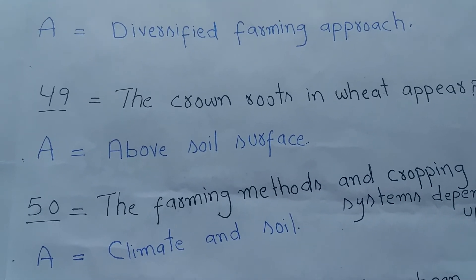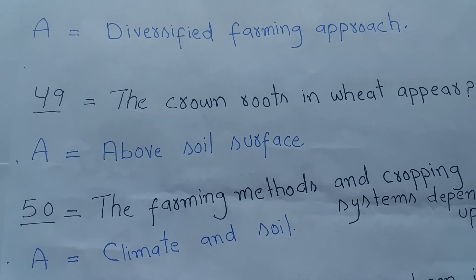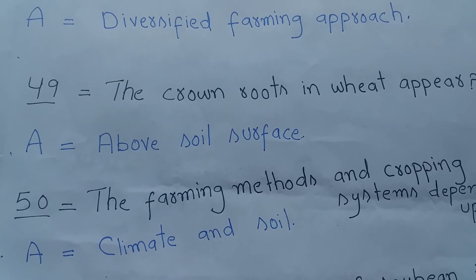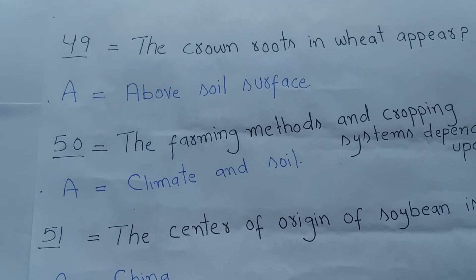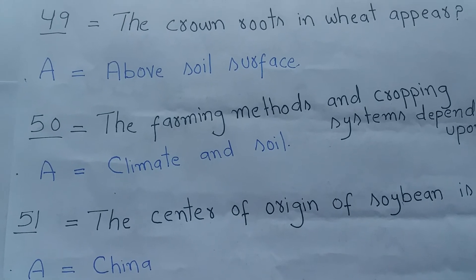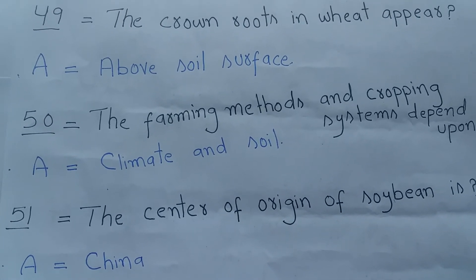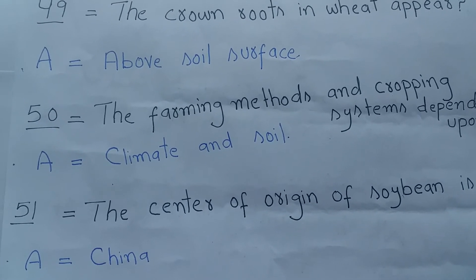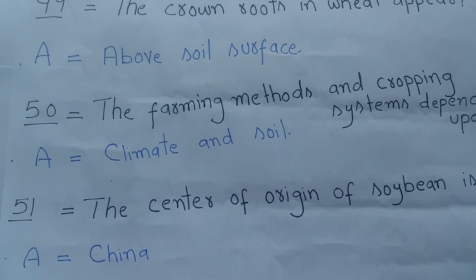Question number 49: The crown roots in wheat appear? Answer is above soil surface. Question number 50: The farming methods and cropping system depend upon? Answer is Climate and soil.